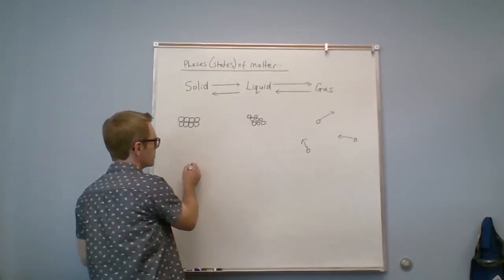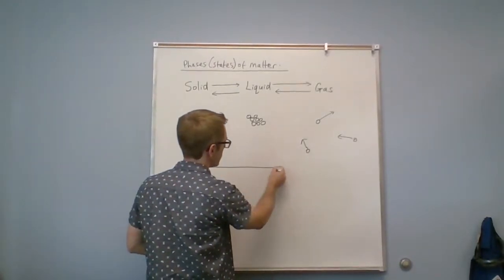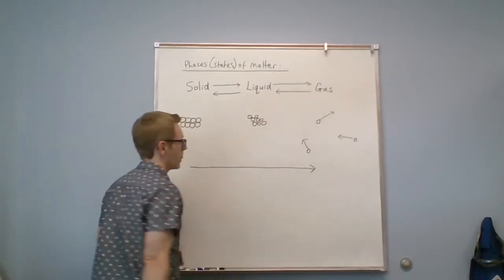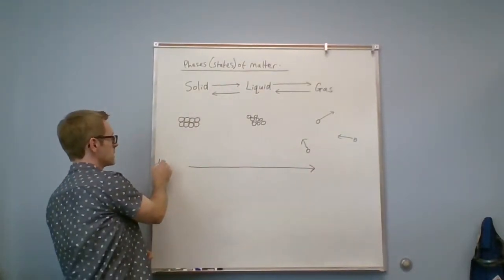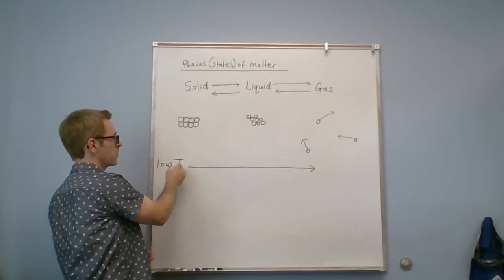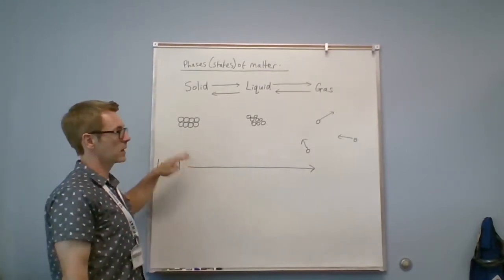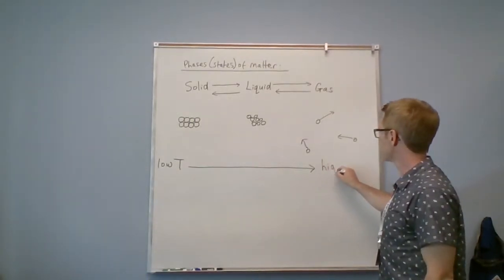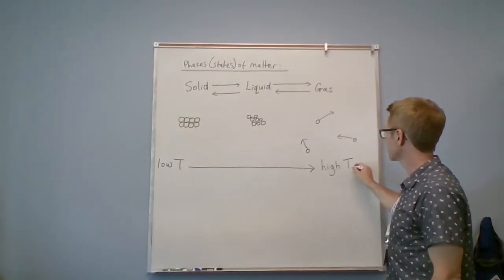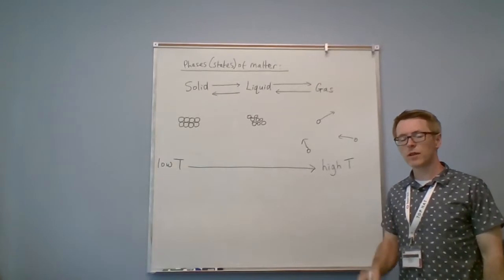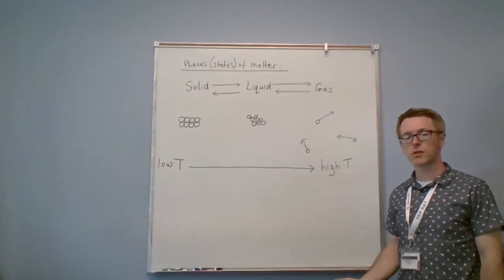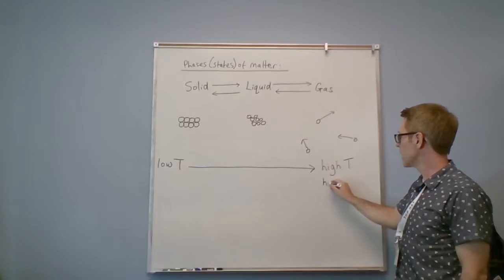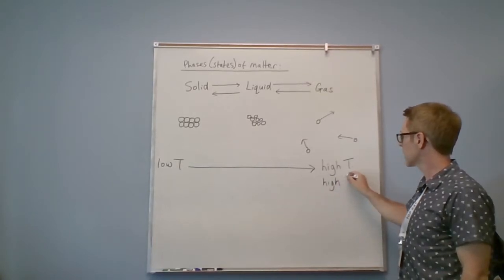So if we were to go from left to right, well, first of all, we know that this is low temperature. Ice is definitely a lower temperature than steam. This would be high temperature. And we've seen in the previous videos that the temperature is proportional to kinetic energy. So this would also be high kinetic energy.